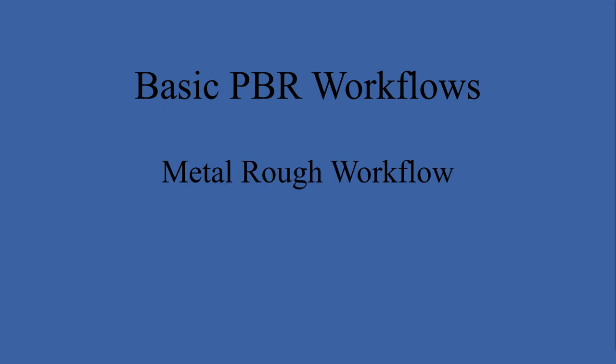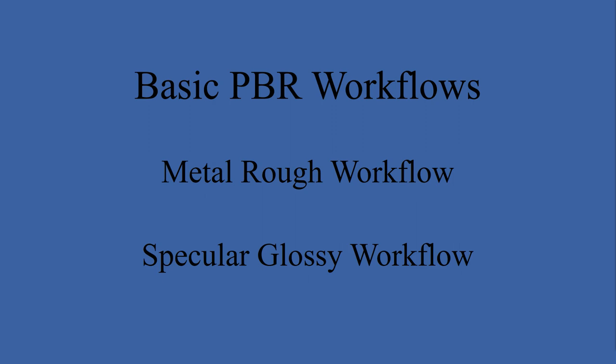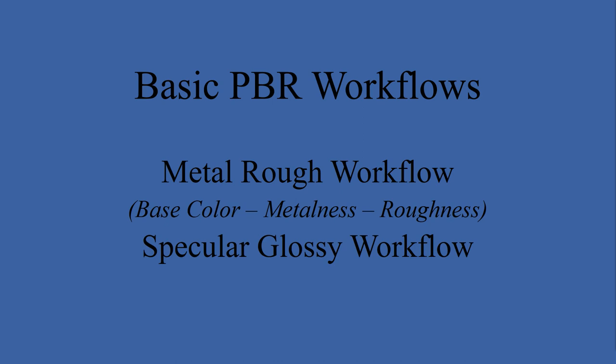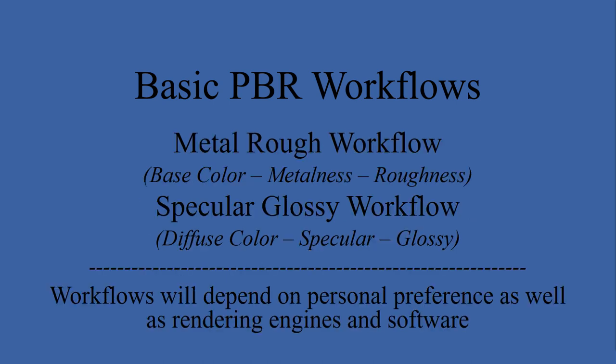There are two basic PBR workflows. One is called the metal rough workflow and the other is the specular glossy workflow. The metal rough workflow uses base color, a metalness map, and a roughness map. The specular glossy workflow uses diffuse color, specular, and glossy maps. Common to both — and optional — are the normal map and the height map. Neither is strictly necessary for PBR rendering, but they should be added if you want materials to look really correct. Which workflow you use depends on personal preference and the rendering engine and software you're using.